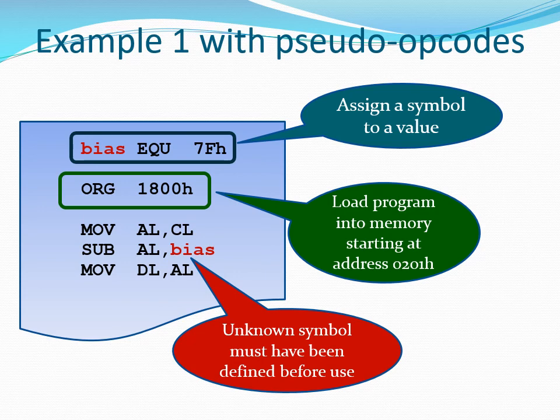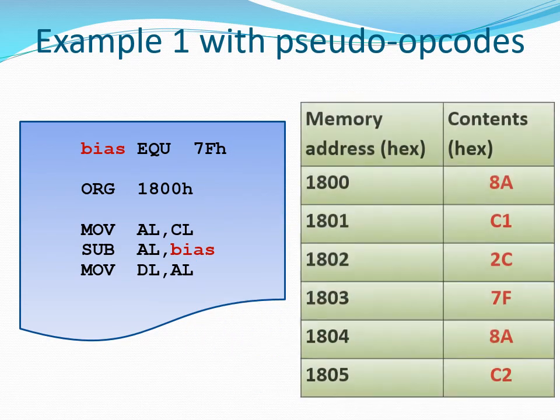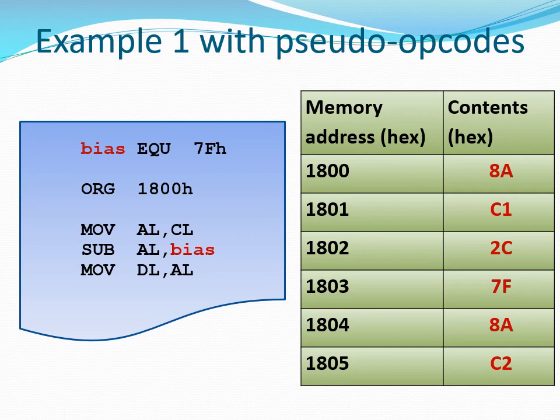The second statement uses the ORG pseudo opcode to define the starting address for loading the program in memory. After the ORG statement, we have three instructions that make up the program. Since the ORG statement is just above the section of the code, the code is going to be loaded into memory starting at address 1800H. The program has now been loaded into memory starting from address 1800H as defined by the ORG statement.